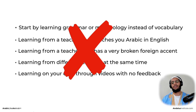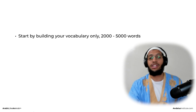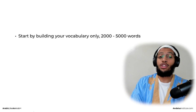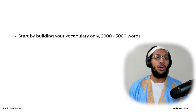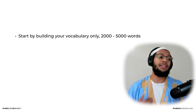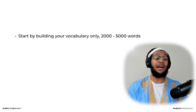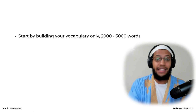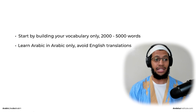All of those we just mentioned are khata — mistakes you shouldn't do. Now let's talk about what you actually need to do. Start by building your vocabulary only, from 2,000 to 5,000 words. That will help a lot — not only will it make learning Arabic easier, but it will also make what is difficult in the Arabic language easier as well.